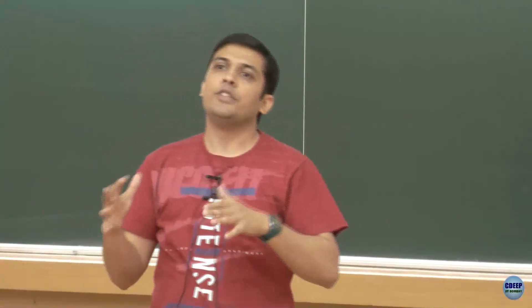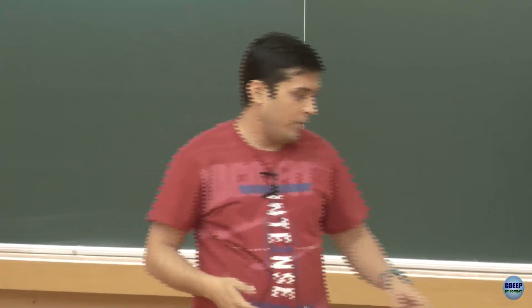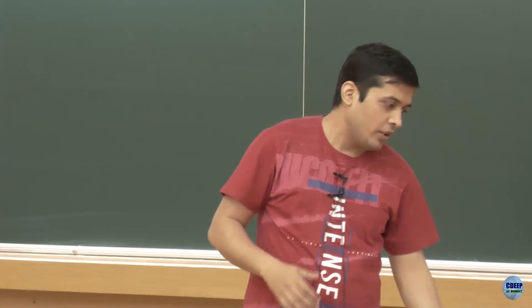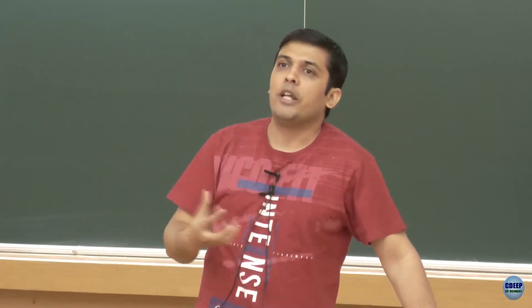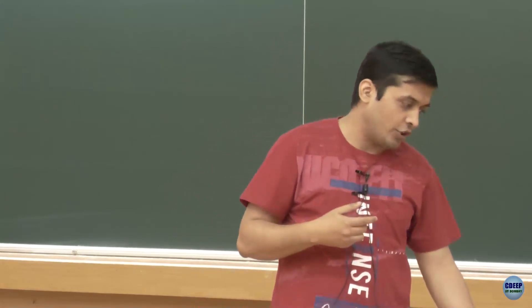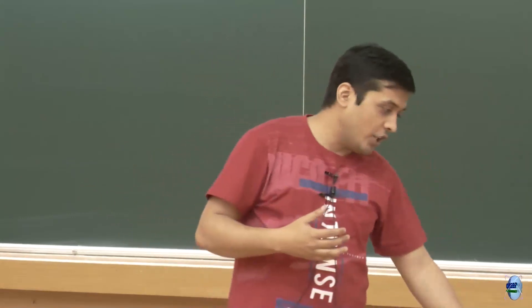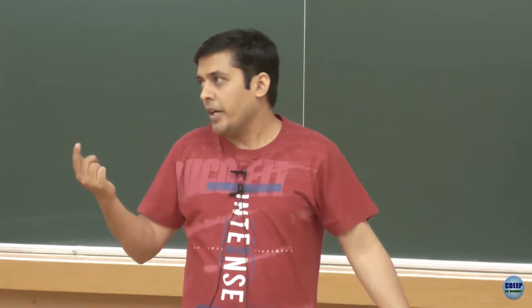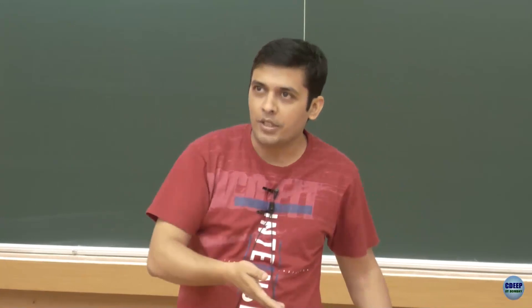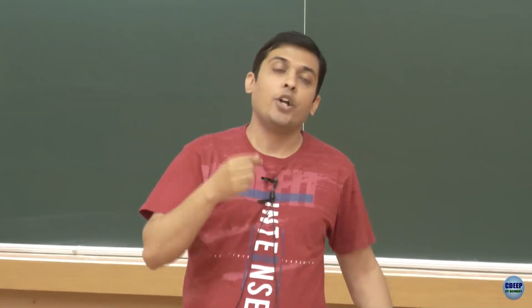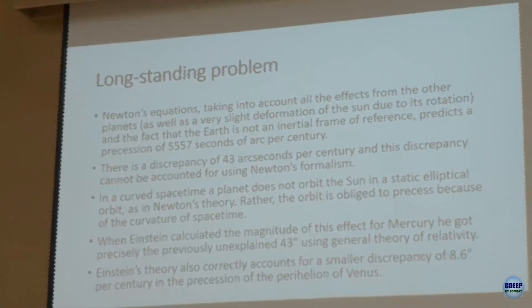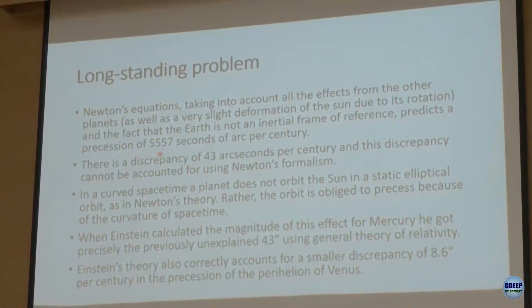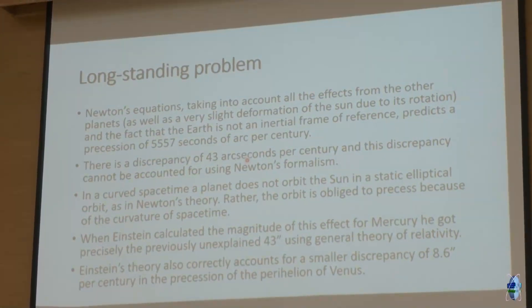Using Newton's equations including gravitational effects from all planets, scientists could not explain the full observed precession of Mercury. The total observed precession is about 5600 arcseconds per century — where one arcsecond is 1/3600 of a degree. Newtonian gravity accounts for only 5557 arcseconds, leaving an unexplained discrepancy of 43 arcseconds.